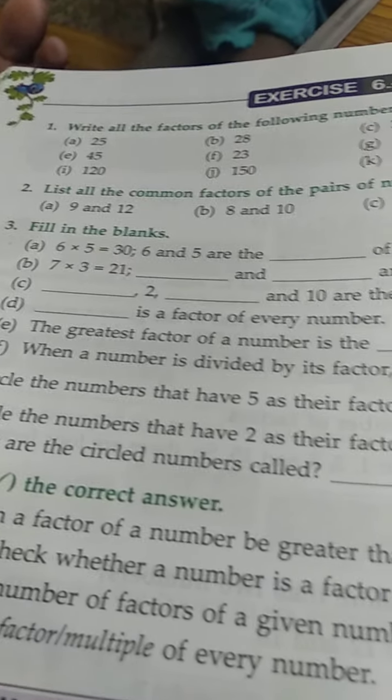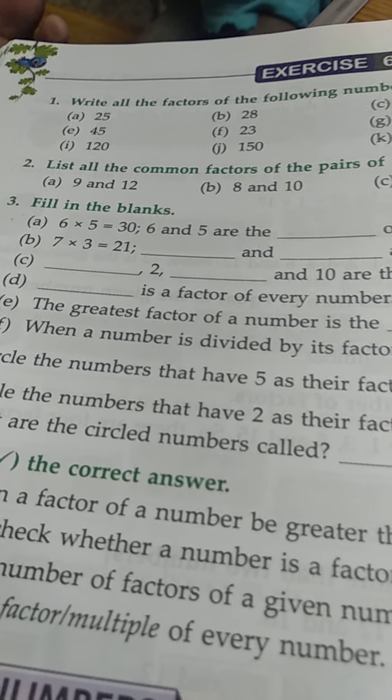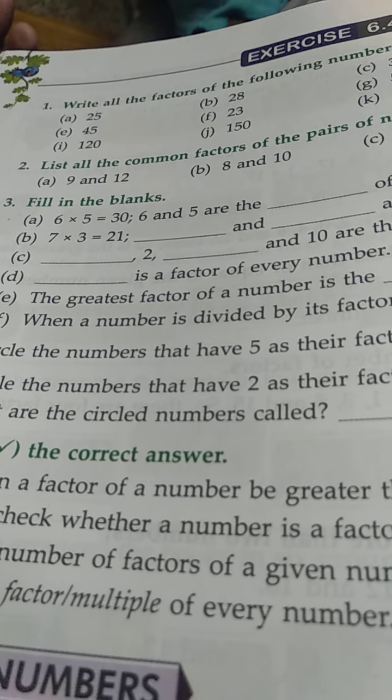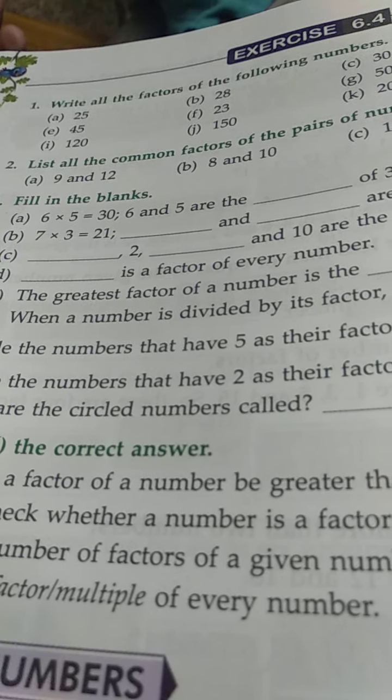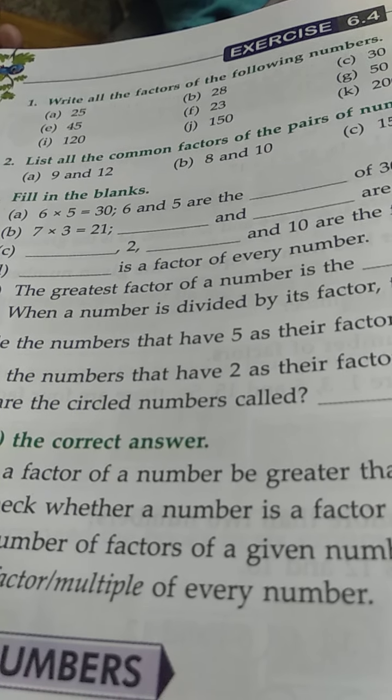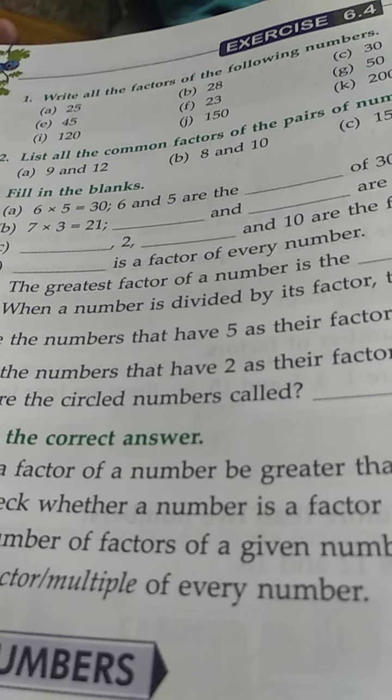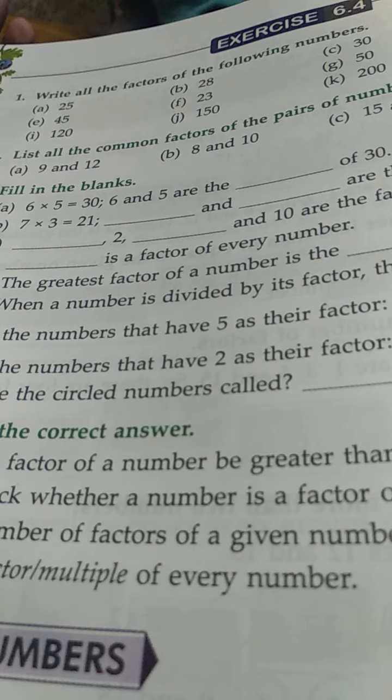Next sum. List the common factors of the pairs of numbers given below. Common factors of 9 and 12. What is common in both these numbers that when we divide, we get no remainder? It is 3, because three 3's are 9 and four 3's are 12. So one is 3. Next one will be 1, because one 1's are 9. So the two numbers are 1 and 3.